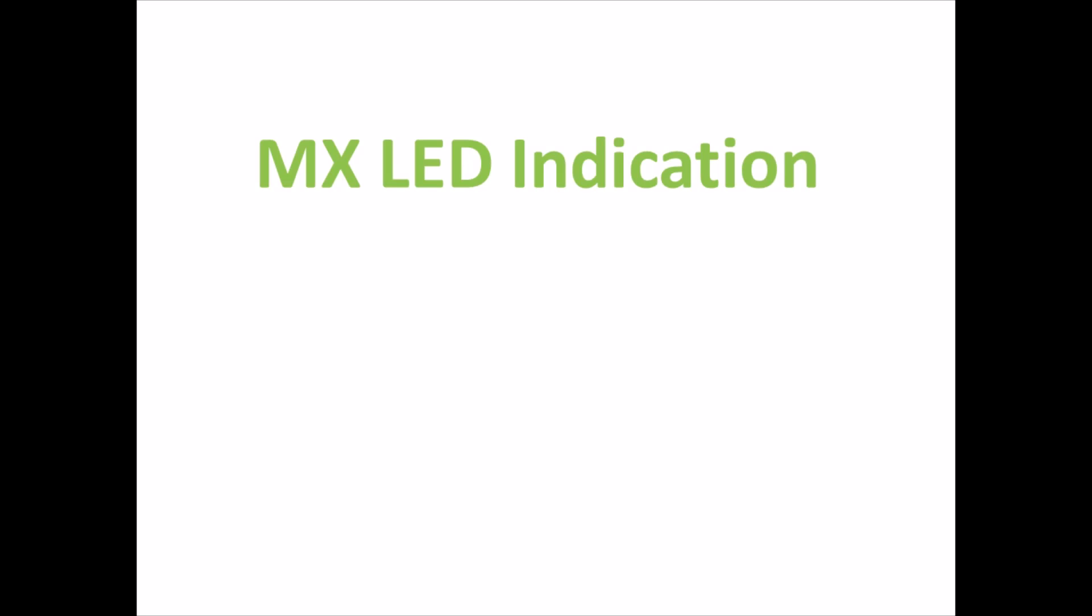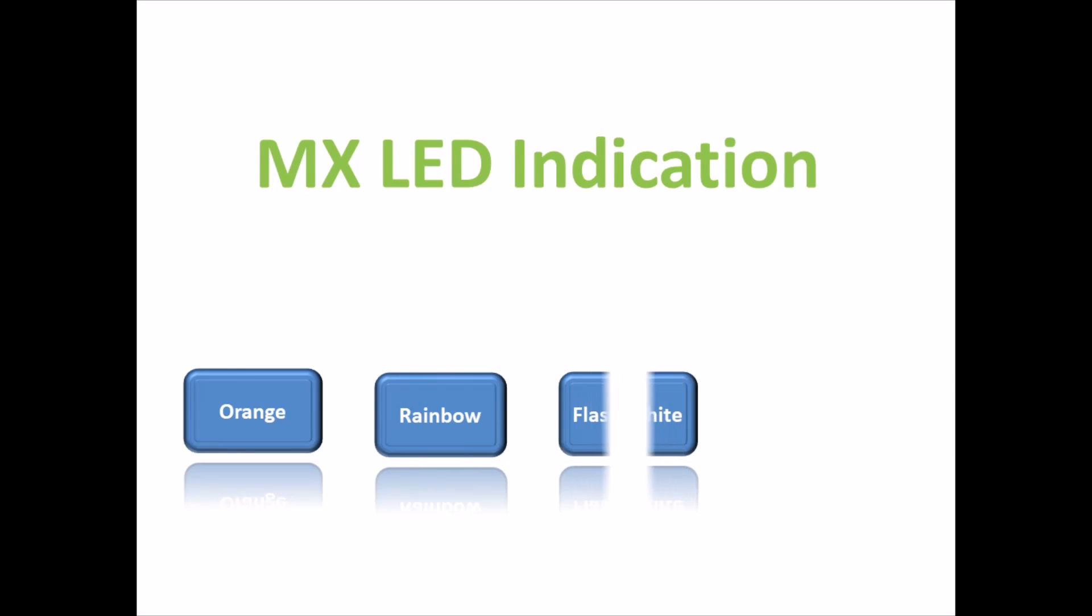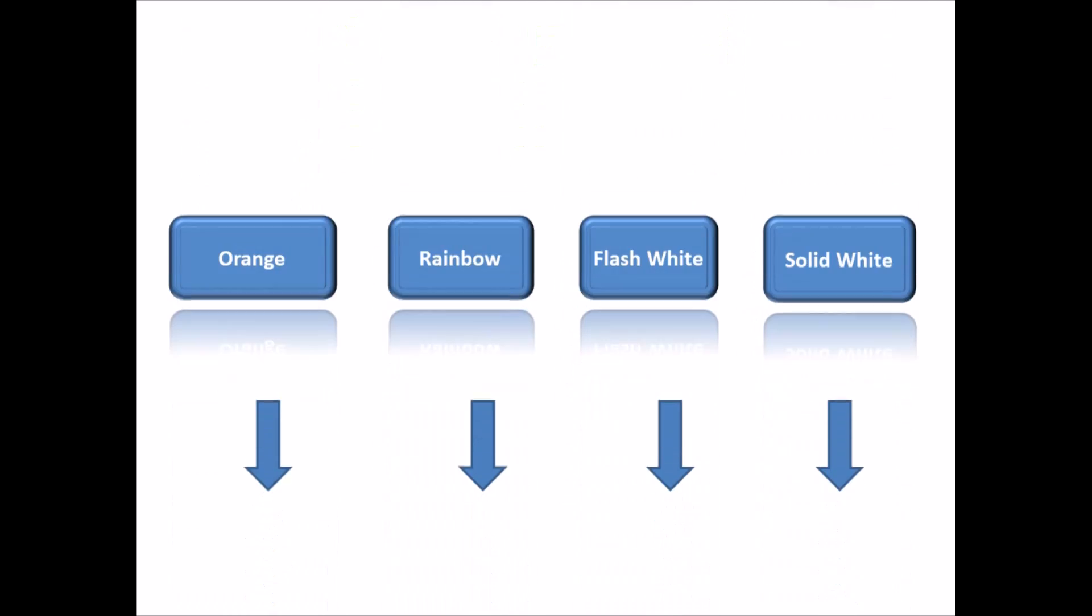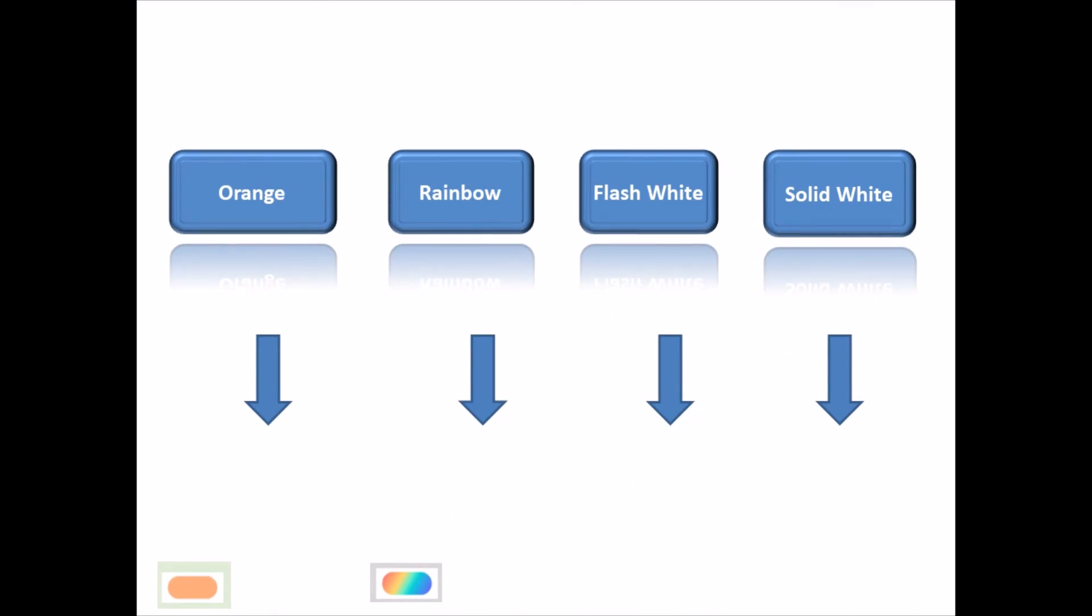There are four types of light indications: orange, rainbow, flash white, and solid white. We'll see what each color represents.